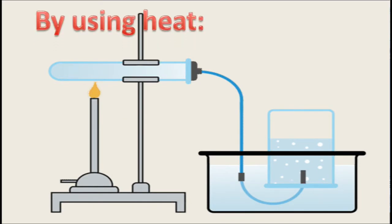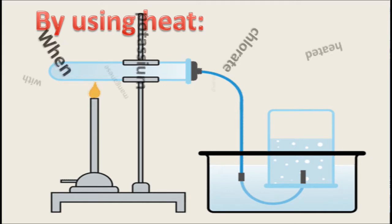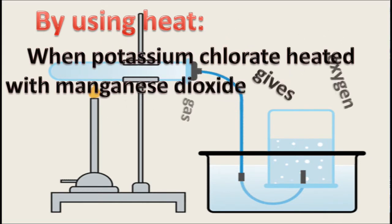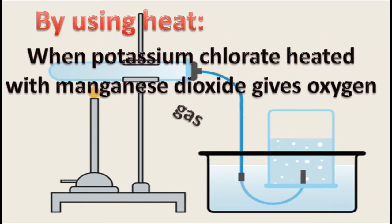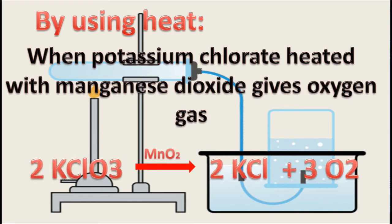The second method is by using heat. When potassium chlorate is heated with manganese dioxide, it gives oxygen. Here also, manganese dioxide acts as a catalyst. Two molecules of potassium chlorate decompose into two molecules of potassium chloride and three molecules of oxygen gas.